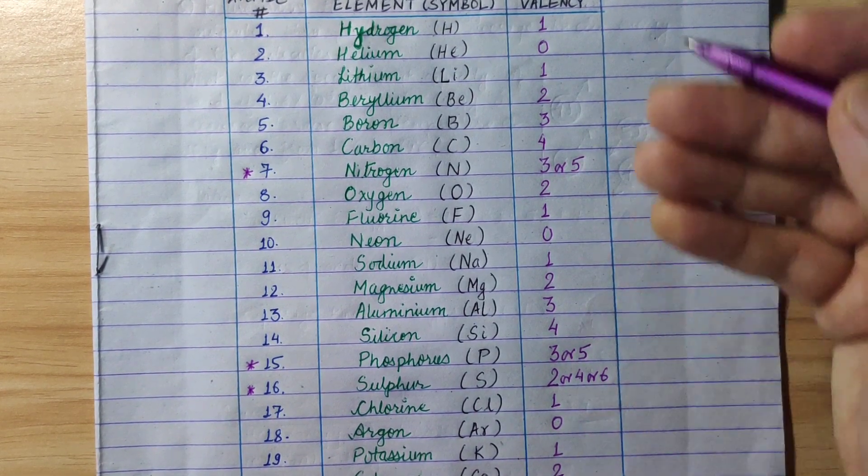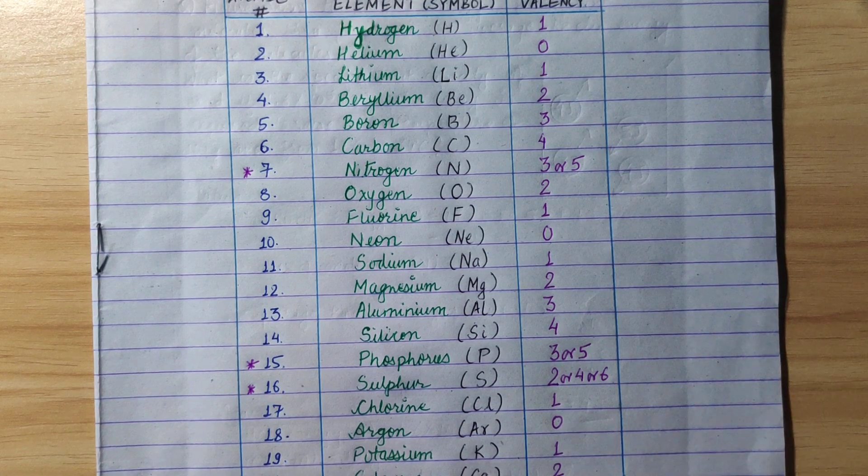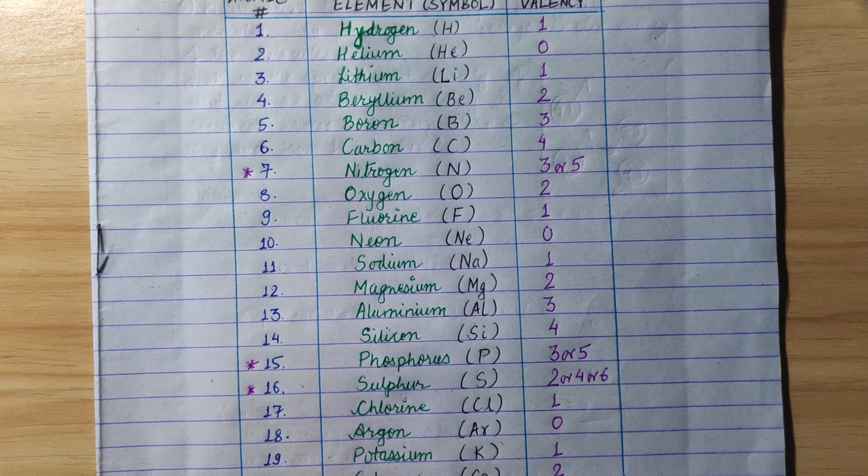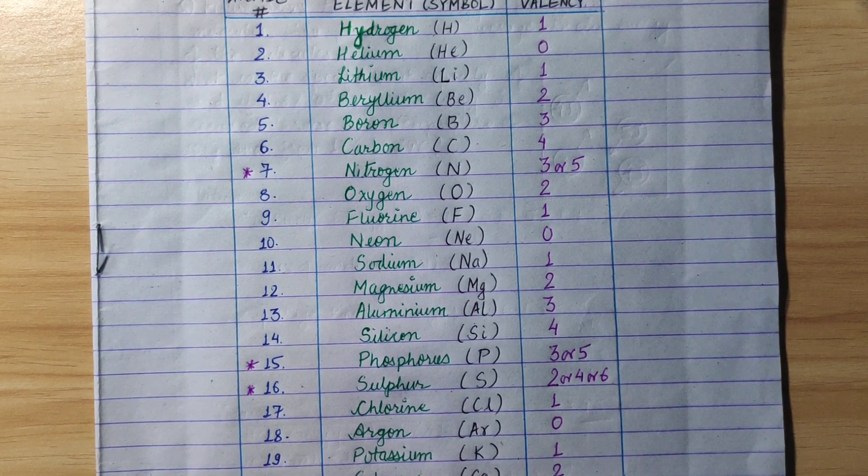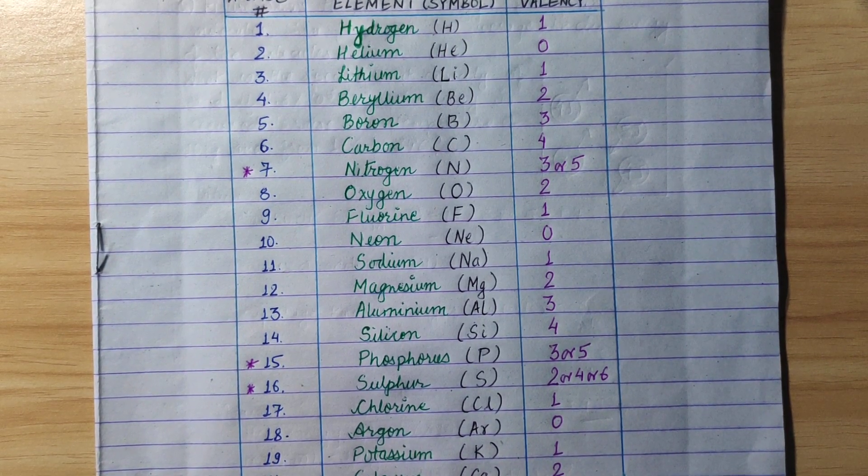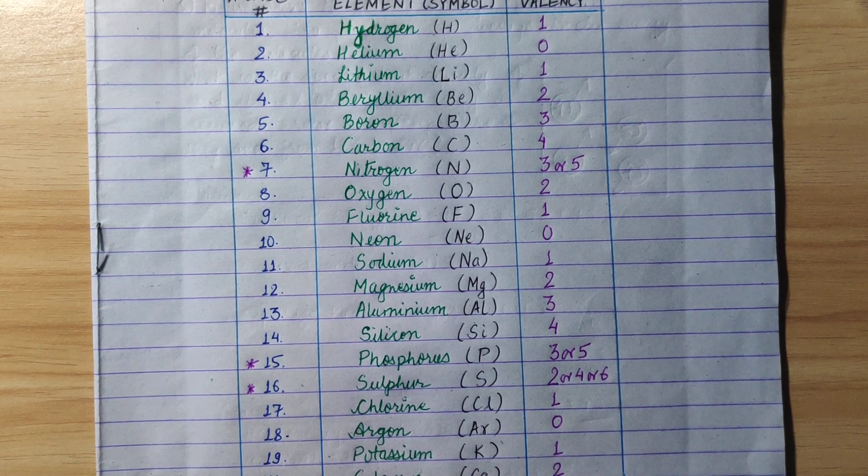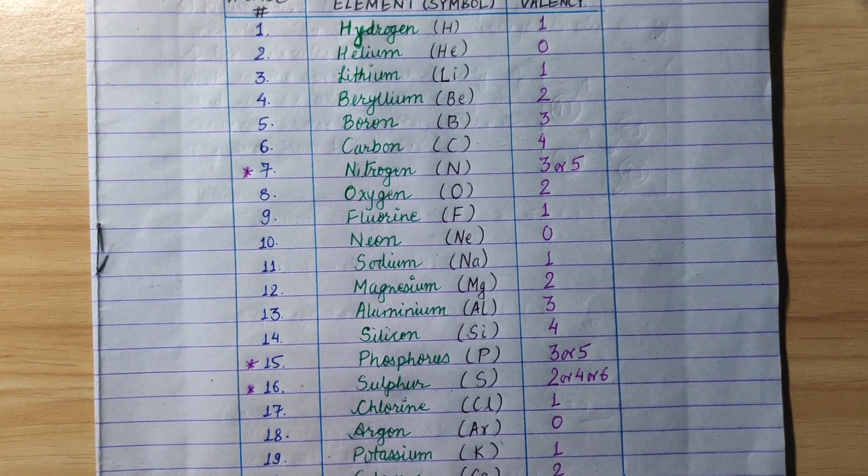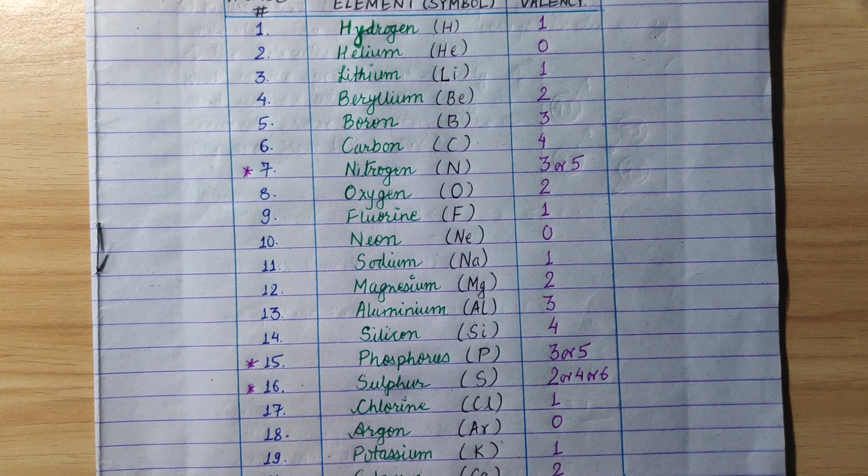This is the valency of 20 elements. The valency will be within 2 minutes. You will follow this. You will be able to find the valency. Thank you.